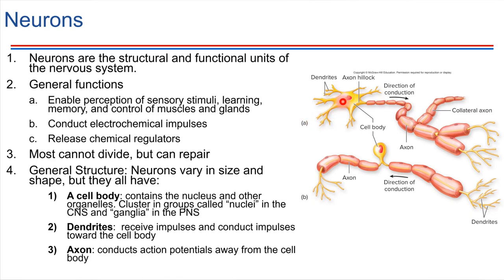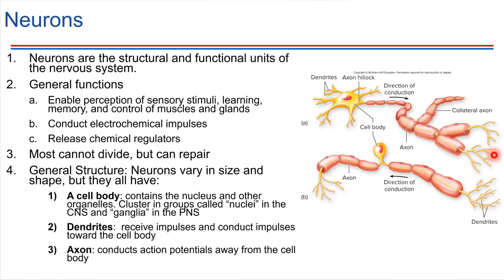The axon is a structure that carries signals away from the cell body. We'll be talking a lot in this chapter about how conduction of signals takes place — we'll be focused on what's going on in this axon. There's going to be a way that a signal can be sent down this axon, and ultimately the signal would get transmitted to an adjacent cell.